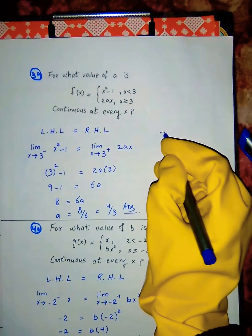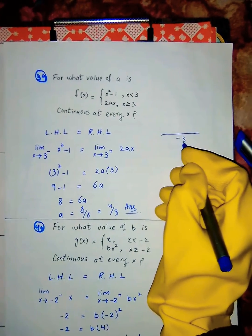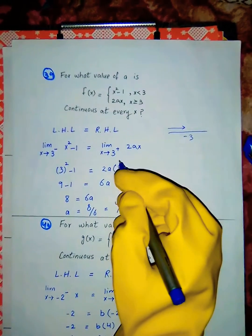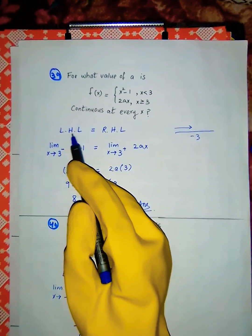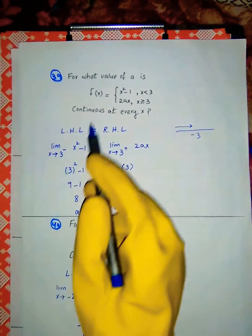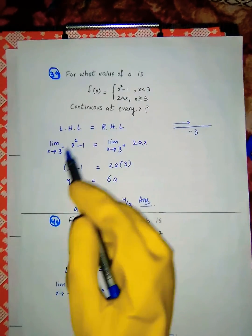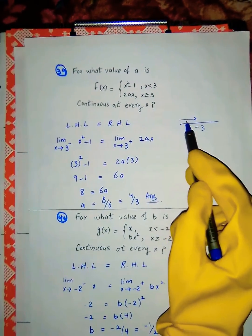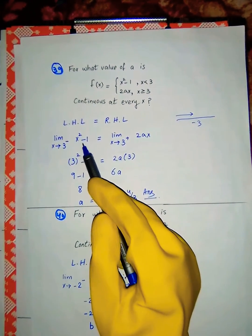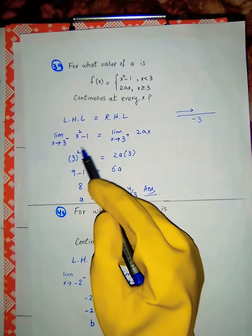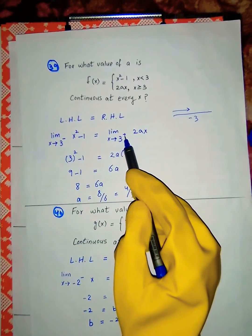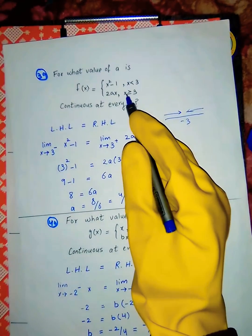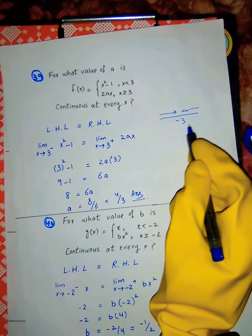The left-hand limit is: limit as x approaches 3 from the left (minus sign indicates left-hand side). The right-hand limit uses x approaching 3 from the right.